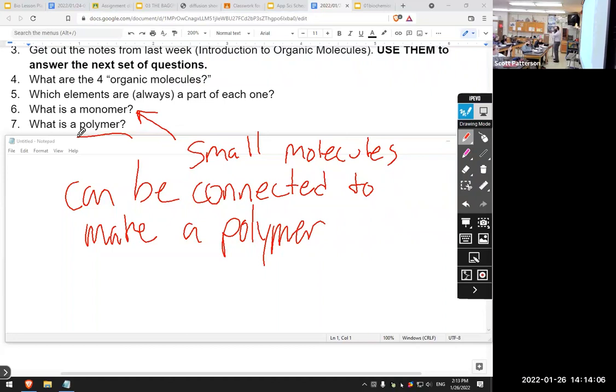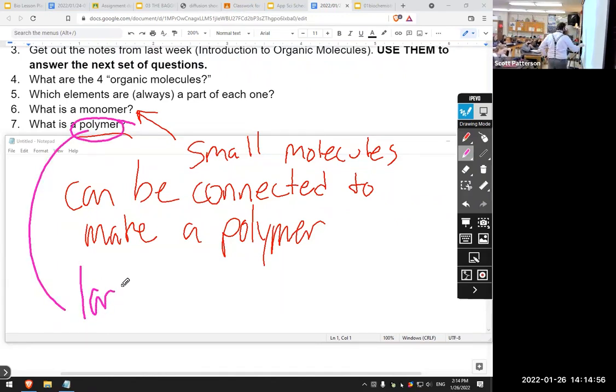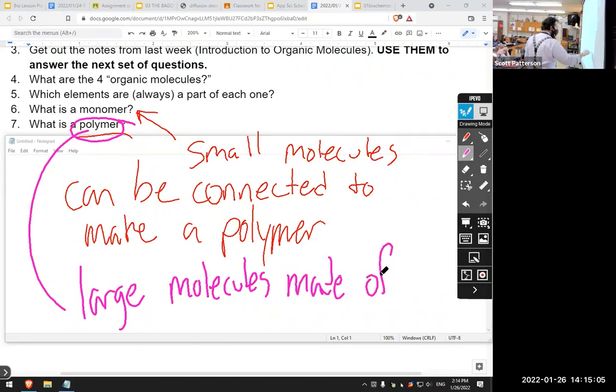The monomer, small molecules, usually they get repeated over and over again. Before you tell me polymer, do you remember glucose I just wrote up there? Glucose is the monomer for making all carbohydrates. It just gets repeated over and over again. Malachi, what's a polymer then? Large molecules of repeated monomers.